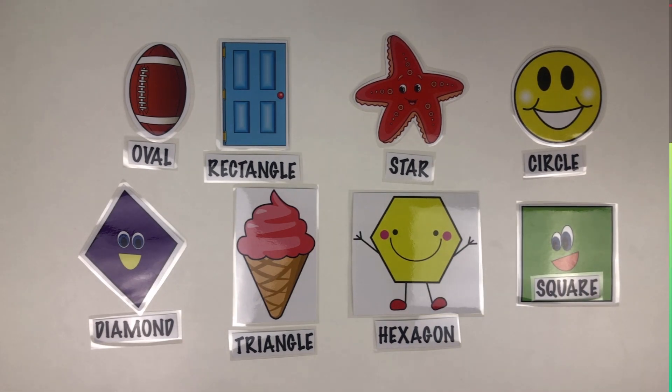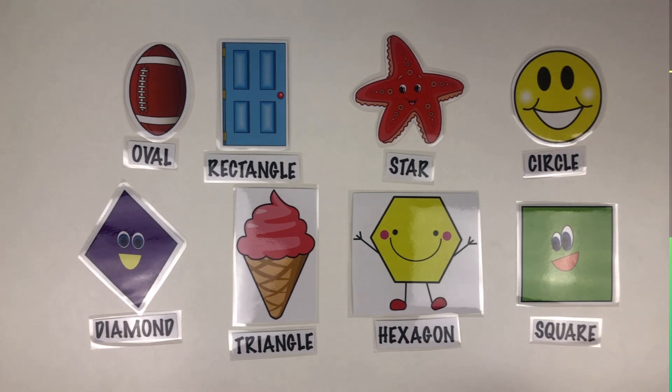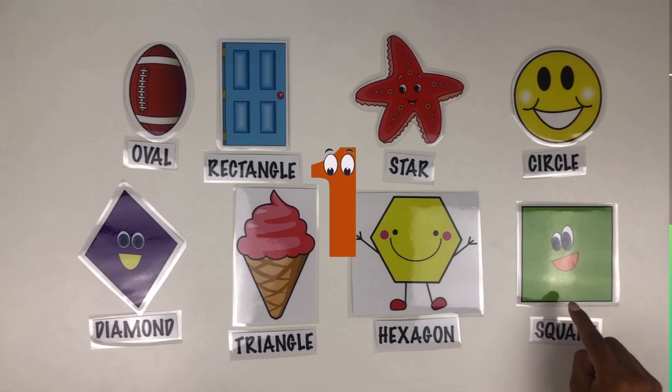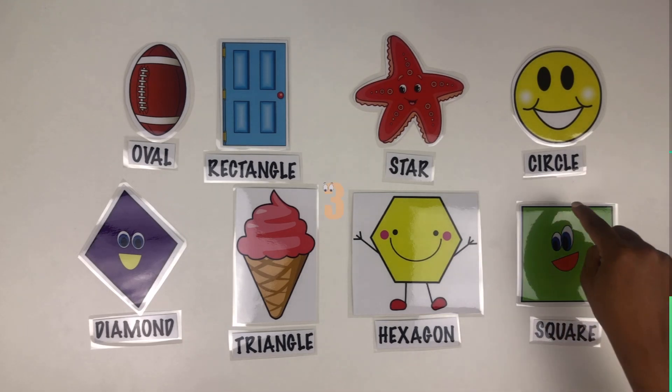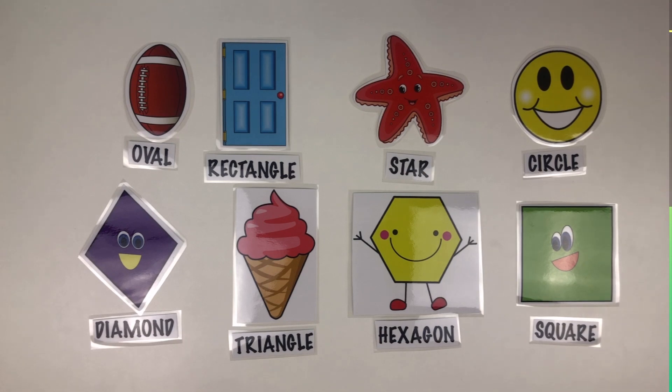Last but not least, how about a square? A square has, let's count, one, two, three, four. A square has four sides. Well done, friends.